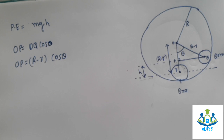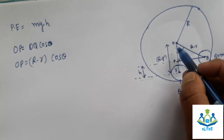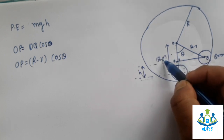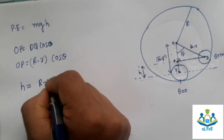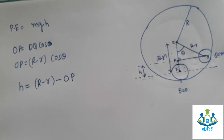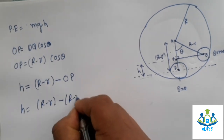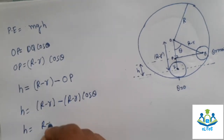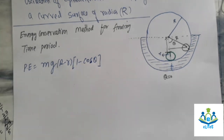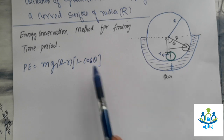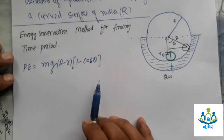To find H, we subtract OP from (R minus r): H equals (R minus r) minus (R minus r)cos(theta), which gives H equals (R minus r)(1 minus cos(theta)). So potential energy equals Mg(R minus r)(1 minus cos(theta)). At theta equals zero, potential energy is zero, confirming the equilibrium state.